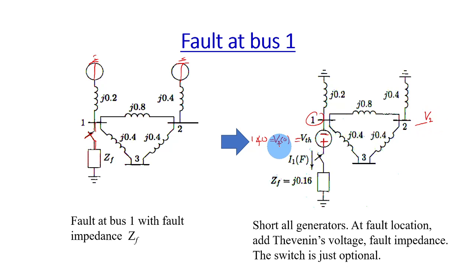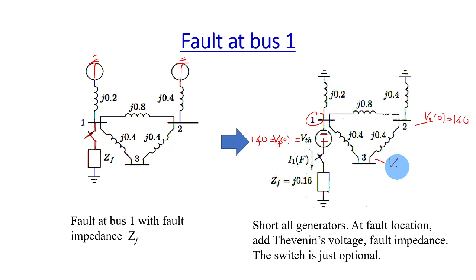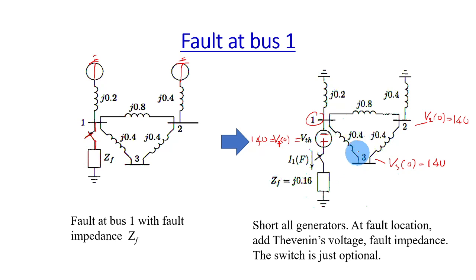Sorry, this is bus number 1. All the pre-fault voltages for all 3 buses are equal to 1 at the angle of 0 — voltage at bus 3 (V3) also at 1 at angle of 0. All values of voltage and impedance are in per unit.